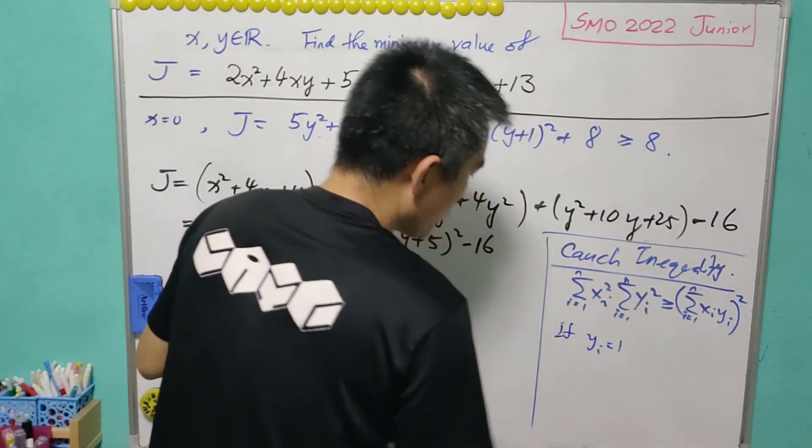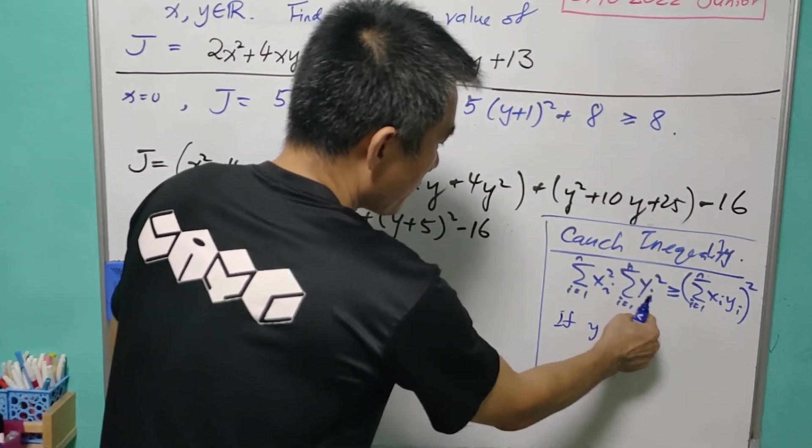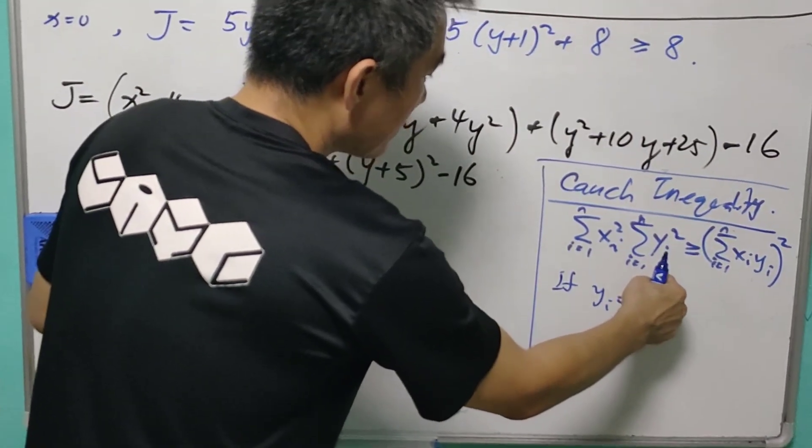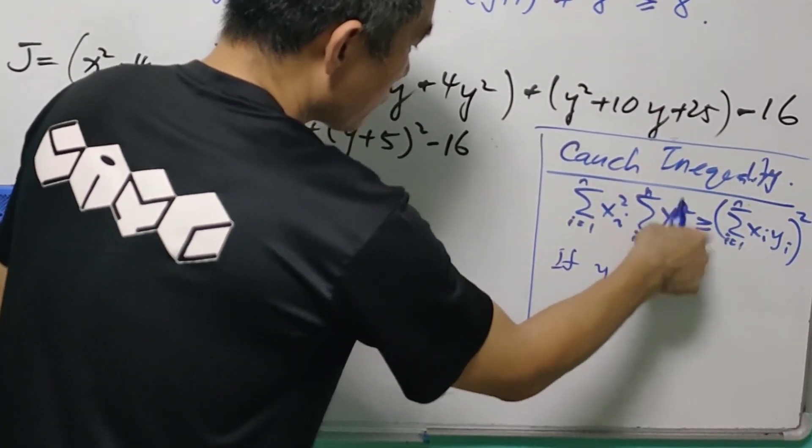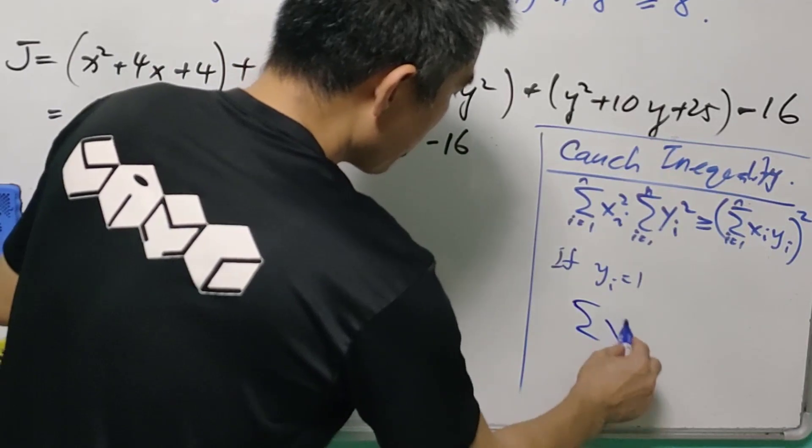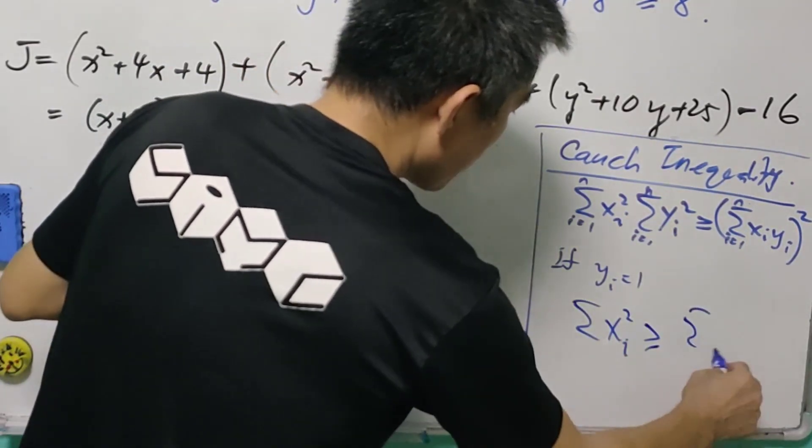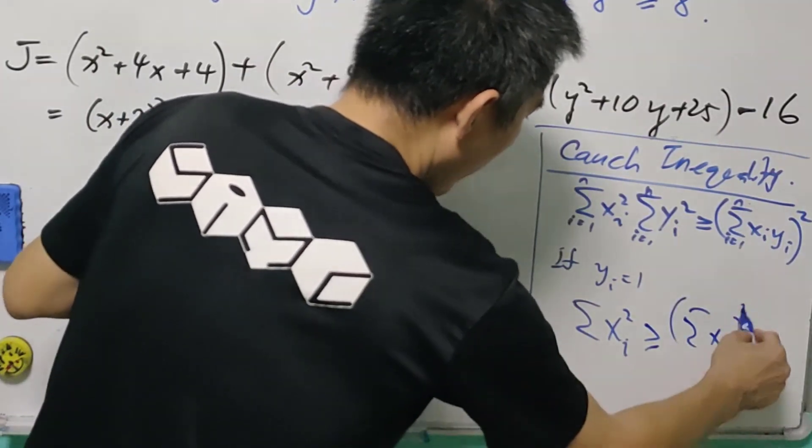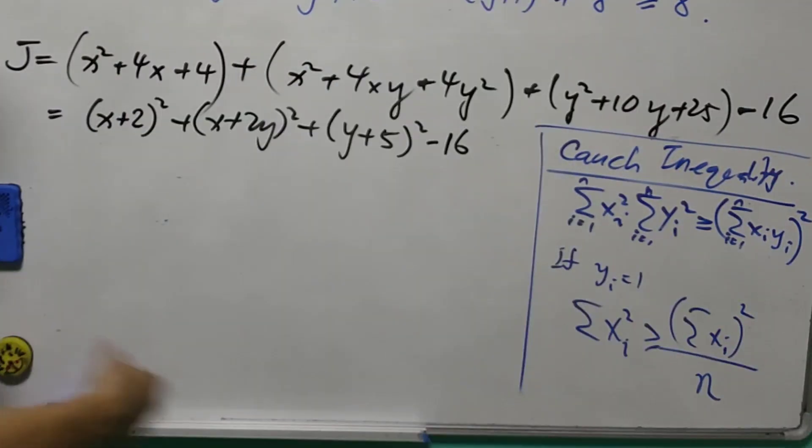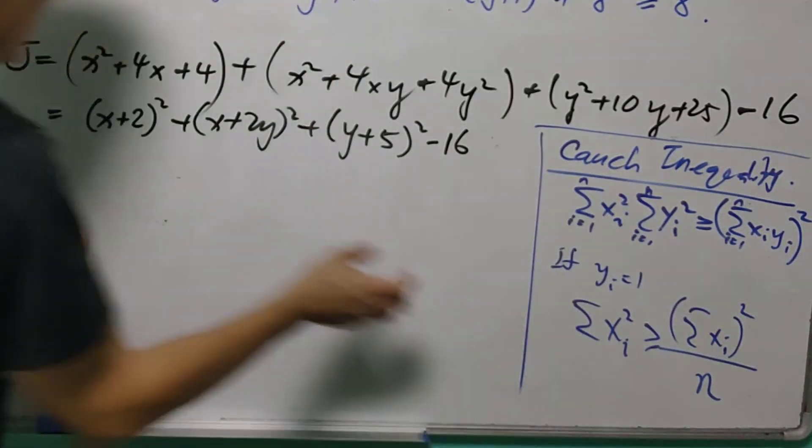If all yi equals to 1, then this will be summation of 1. So it will be a total of n. So meaning that summation xi squared will be greater than equals to summation xi squared over n. Now we are going to use this result here.